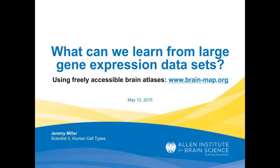I would now like to introduce today's speaker, Jeremy Miller, Ph.D. Dr. Miller is a scientist at the Allen Institute for Brain Science. He joined the Allen Institute in 2011 to help with computational data analysis of the Allen Human Brain Atlas Project, and has extended its data to transcriptional atlases of the developing human and non-human primate brains. Dr. Miller is currently interested in using large-scale gene expression data to characterize cell types of the mammalian brain and also identify molecular pathways unique to humans. He received his Ph.D. in neuroscience from UCLA where he studied gene expression changes in the brain in Alzheimer's disease and normal aging. I will now turn it over to Dr. Miller for his presentation.